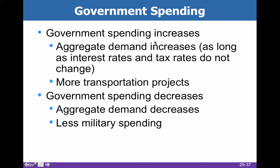When government spending increases, aggregate demand increases, as long as interest rates and tax rates don't change. There is a crowding out effect: the government can spend so much money that interest rates rise, or alternatively, state governments that can't run deficits may have to raise taxes to pay for increased spending. If either of those things change, they could counterbalance or counteract government spending changes.